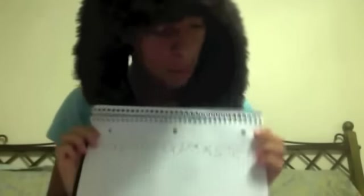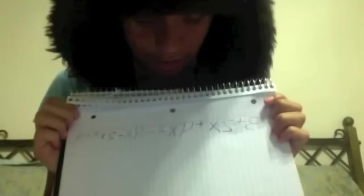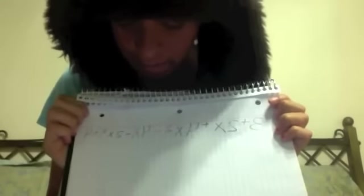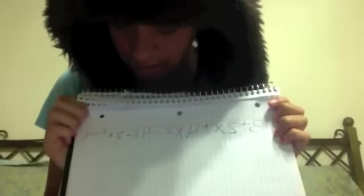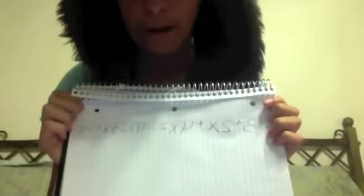Here's a problem for you to solve: 3 plus 2x plus 4x to the 2nd minus 4x minus 2x to the 2nd plus 4. A little hint: combine like terms, and if you feel like you can't reduce anymore, then don't.